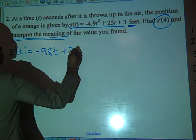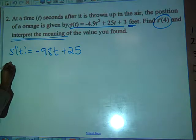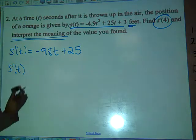S prime of T equals negative 9.8T plus 25. That's it. So now we need to evaluate that where? At 4. At 4.